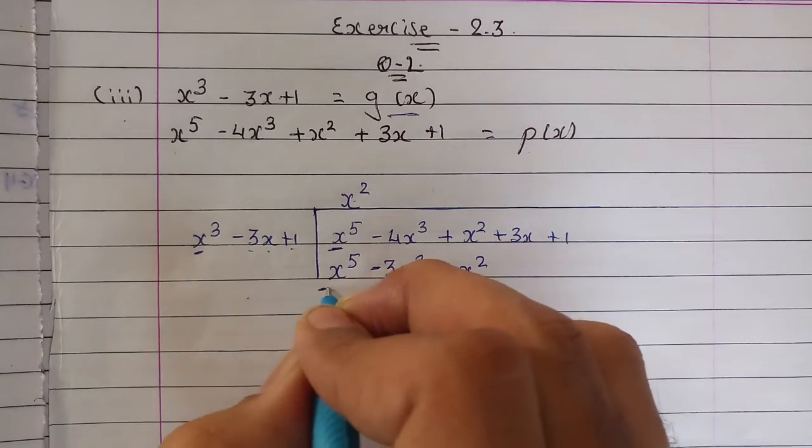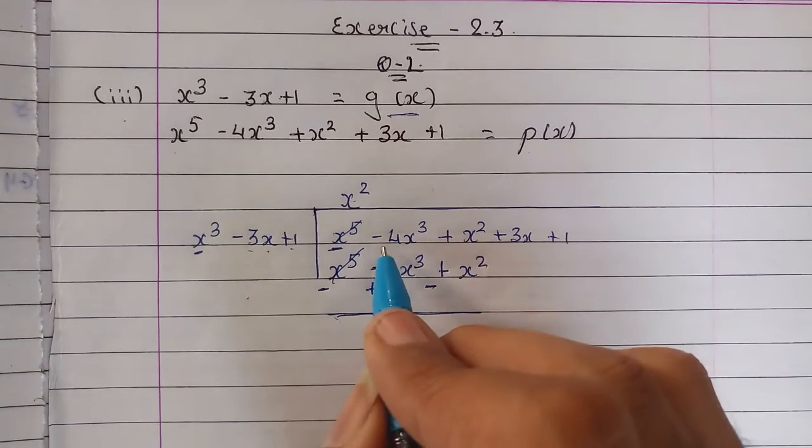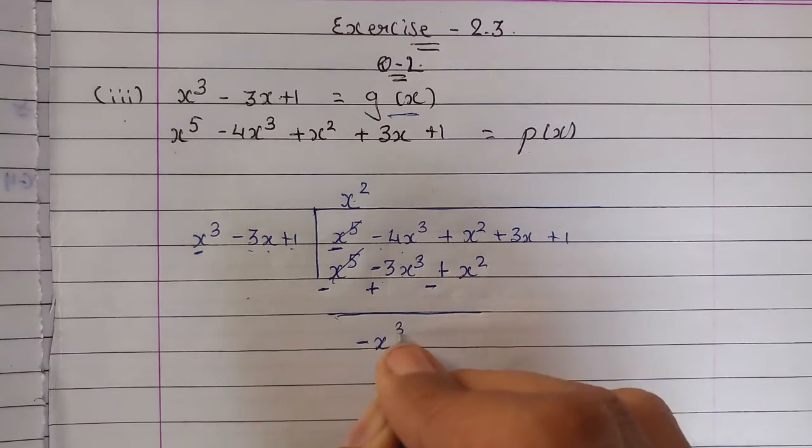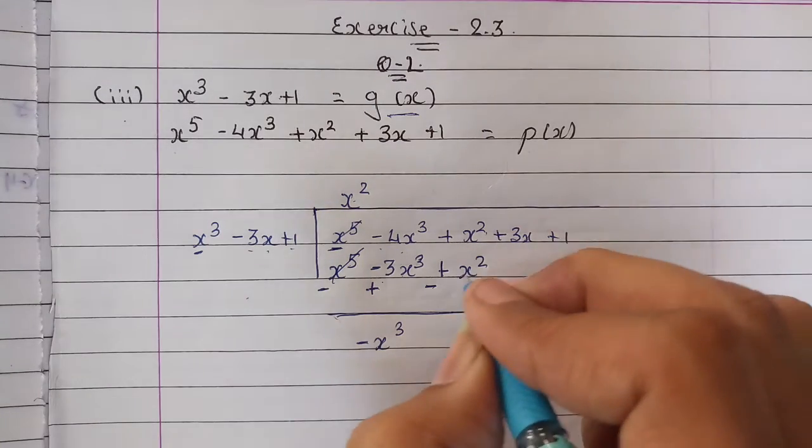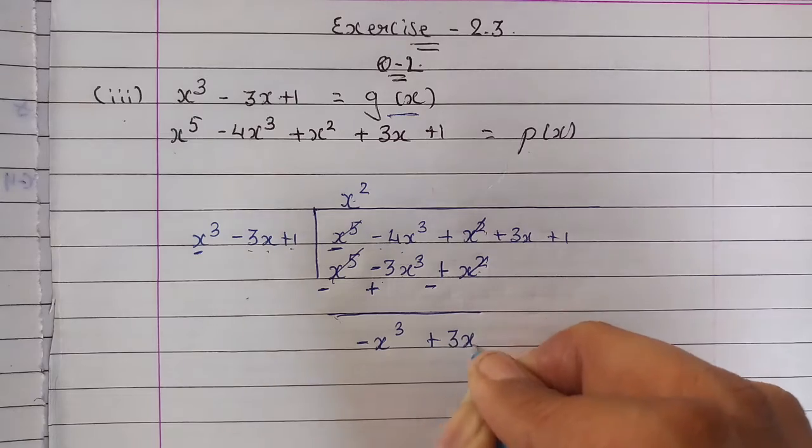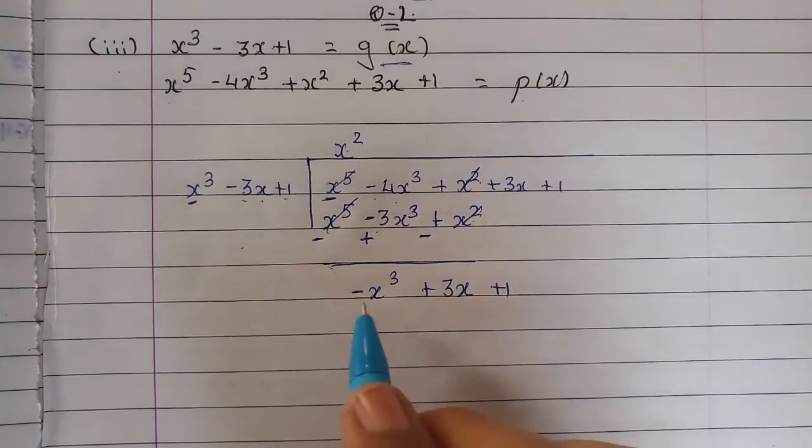Change the signs: this minus becomes plus, this plus becomes minus. This will get cancelled. -4x³ plus 3x³ will be -x³, plus x² and minus x² will cancel, plus 3x plus 1. Next step...